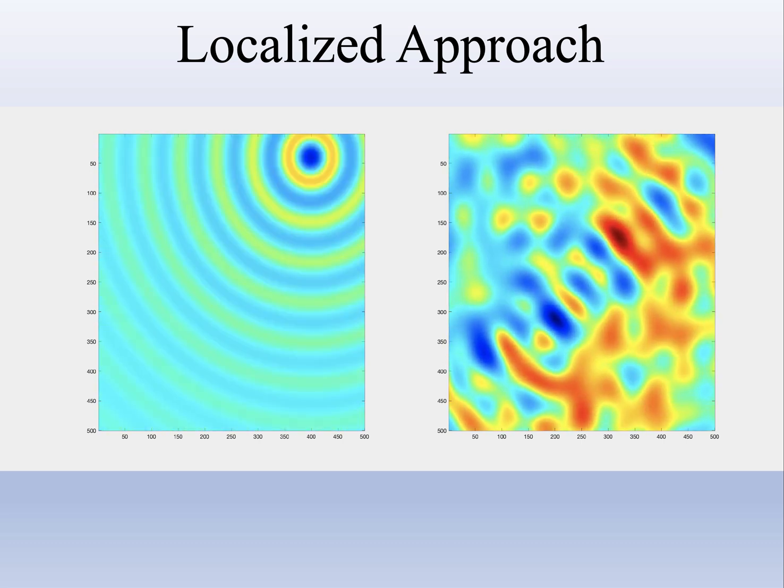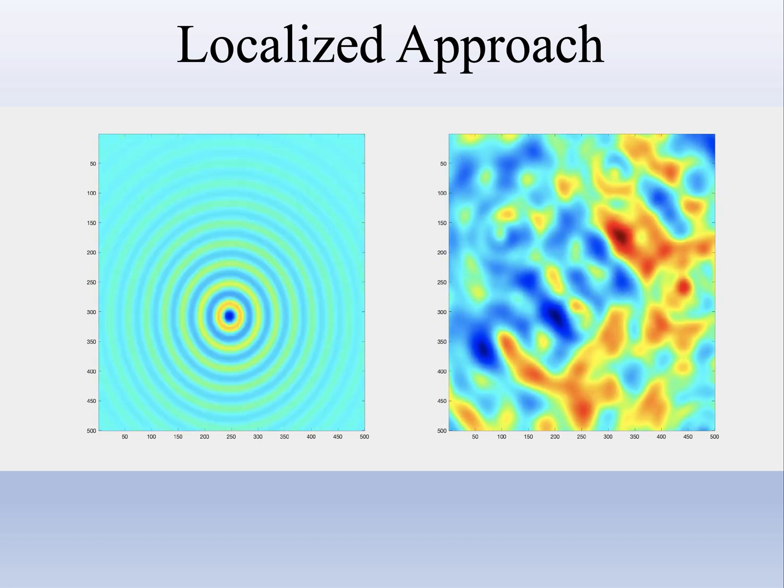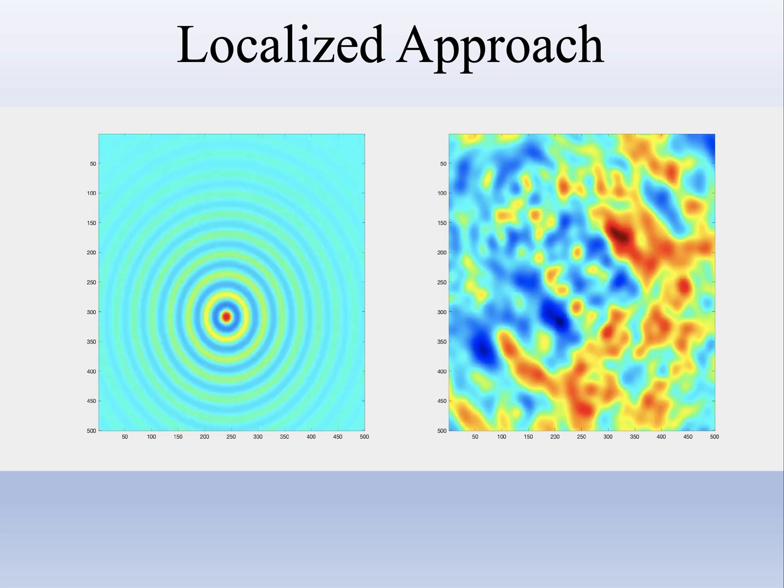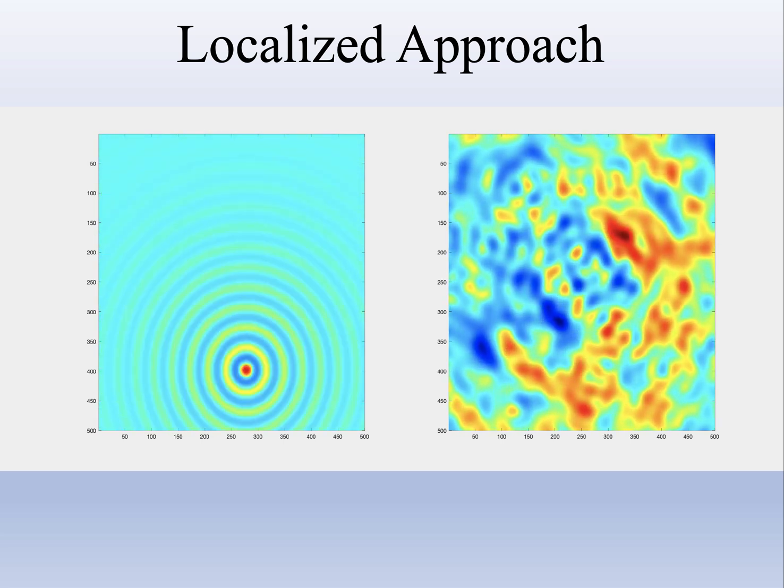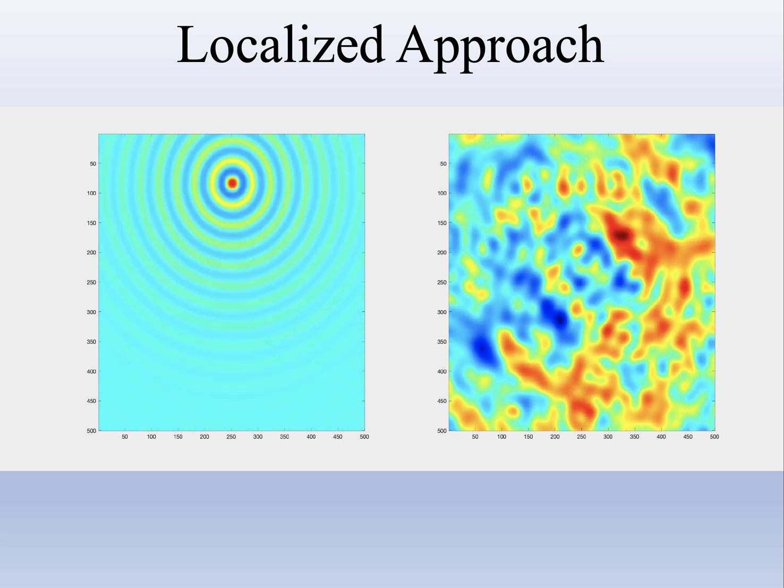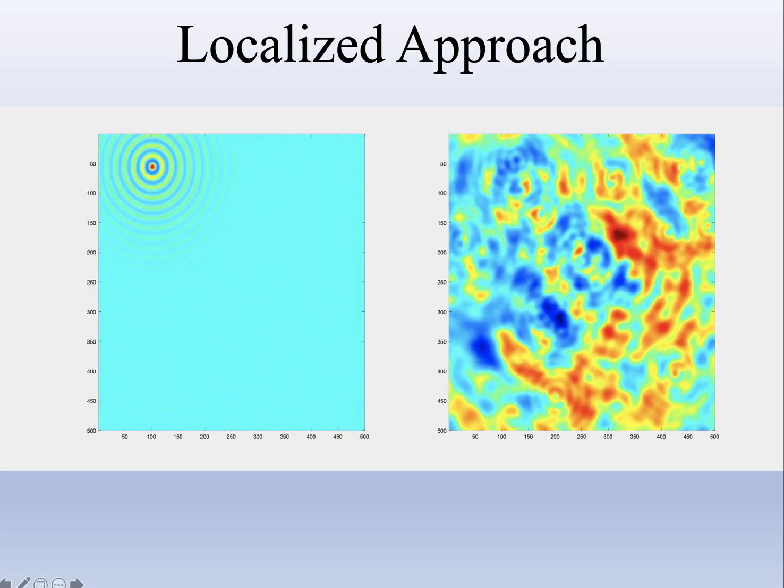These are all what are called point spread functions, and they're all adding together in random amplitudes, phases, and locations. We see that we can again develop a random distribution of high intensities and low intensities.